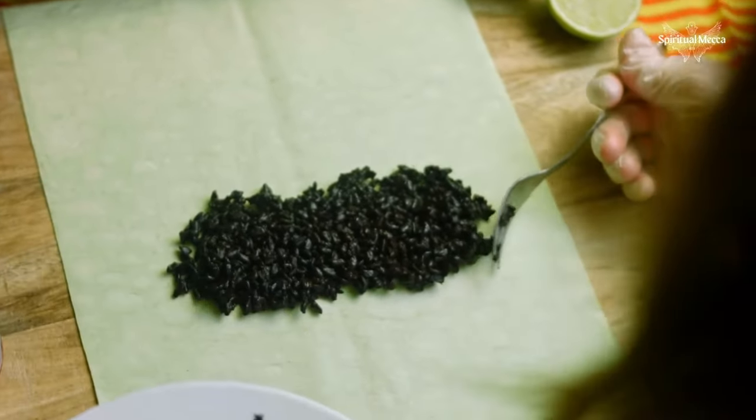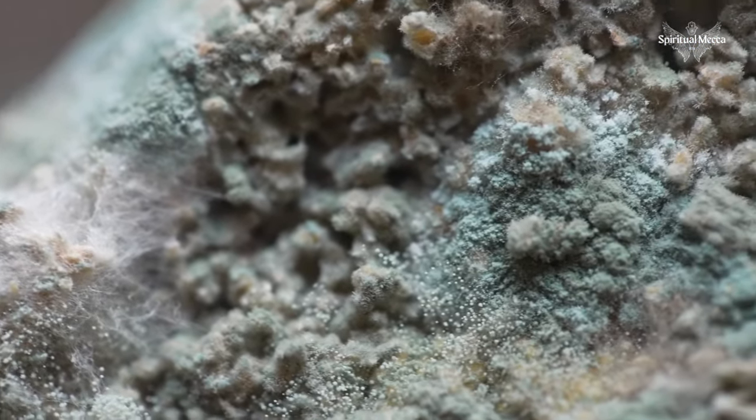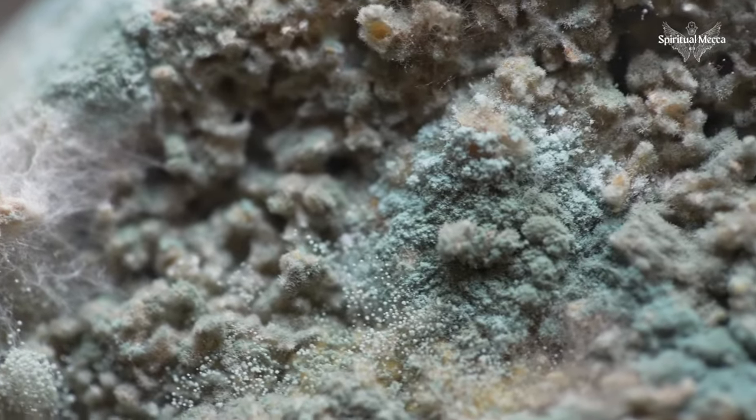Beaker number two, which was labeled 'you idiot,' turned black. And lastly, beaker number three, the ignored rice, began to rot, turning green.